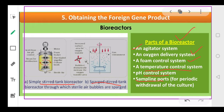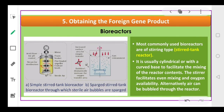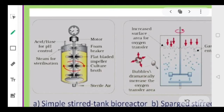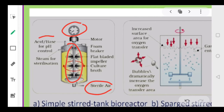The simple stirred tank bioreactor has a cylindrical or curved base, as you can see in the picture. It has a continuously rotating device fitted with a motor. Temperature is regularly monitored, sterile air is blown from below, and pH is controlled with acid or base so the organism can grow properly. Because it continuously rotates, it mixes the culture with the oxygen so organisms can easily utilize the proper amount of oxygen.